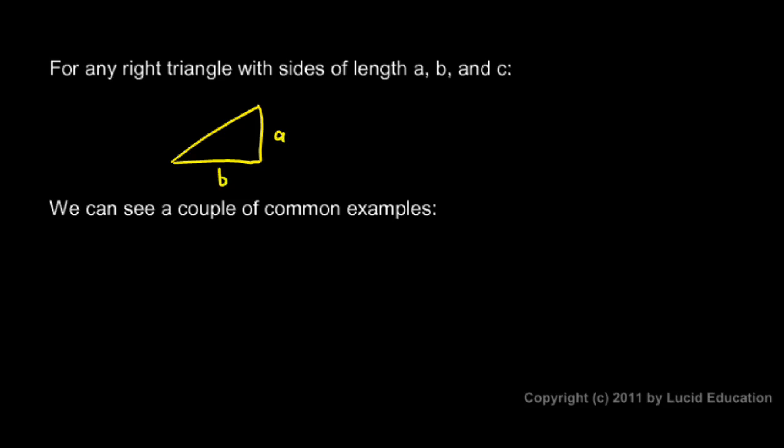So a is just a variable. That's a number that represents the length of this side. And b is another number that represents the length of that side. And when we draw a right triangle, it's pretty common to put a little square down there in the corner, indicating that that's a right angle.